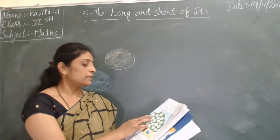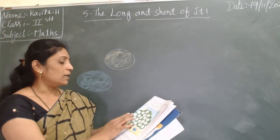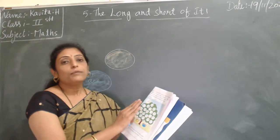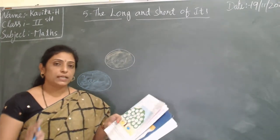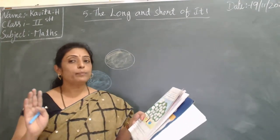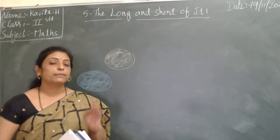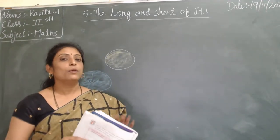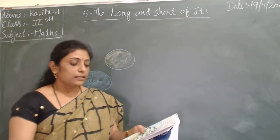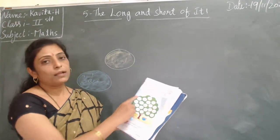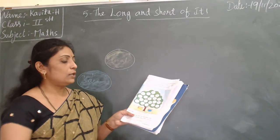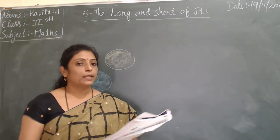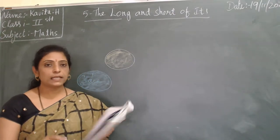Objects measured in meter get blue color. Objects measured in centimeter get yellow color. You have to color all the remaining objects in this tree. You can complete this activity at home.